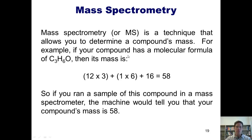For example, if your compound had a formula of C3H6O, then its mass would be 12 times 3 because carbons weigh 12, 1 times 6 because hydrogens weigh 1, and 16 because oxygen weighs 16. All added together gives you 58. So if you ran a sample of this compound on a mass spectrometer, your machine would tell you that your compound's mass is 58.